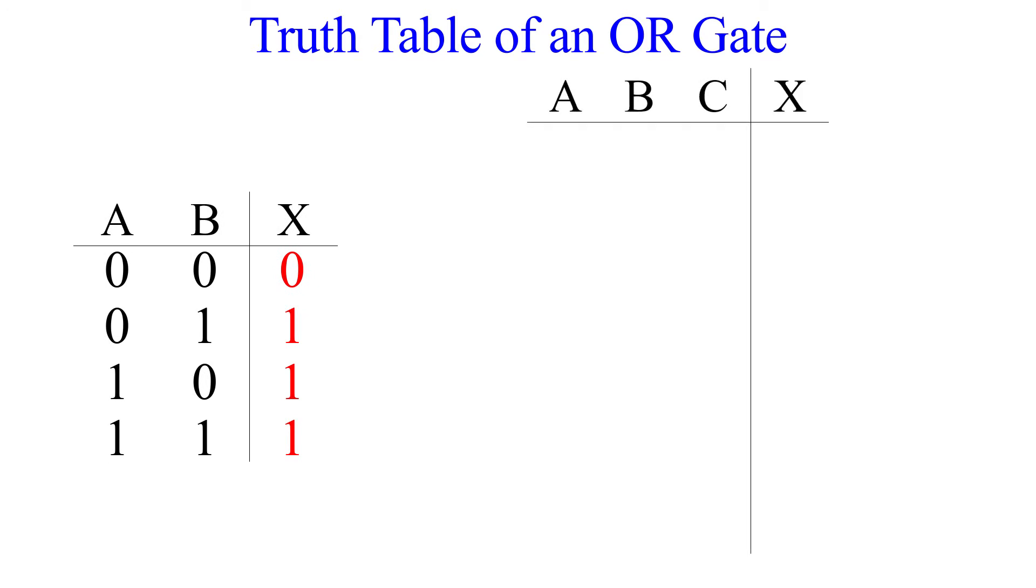Why don't you try and make a truth table for a three input OR gate? First, how many possible input combinations will there be? If you said 8, then you are correct. 2 to the third power is 8, where the exponent 3 is the number of inputs.